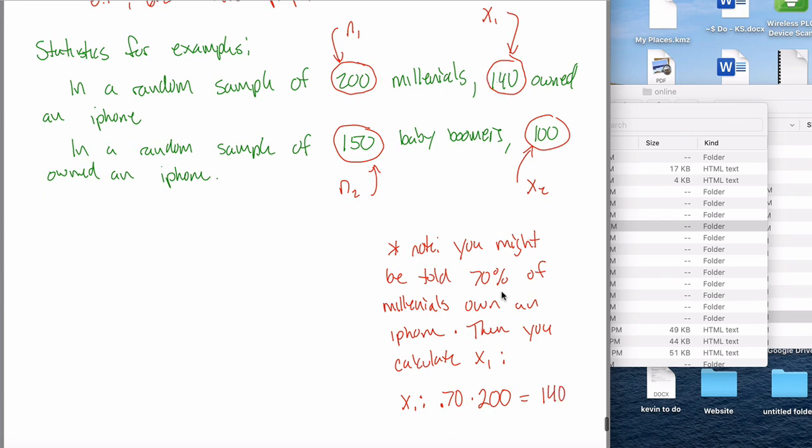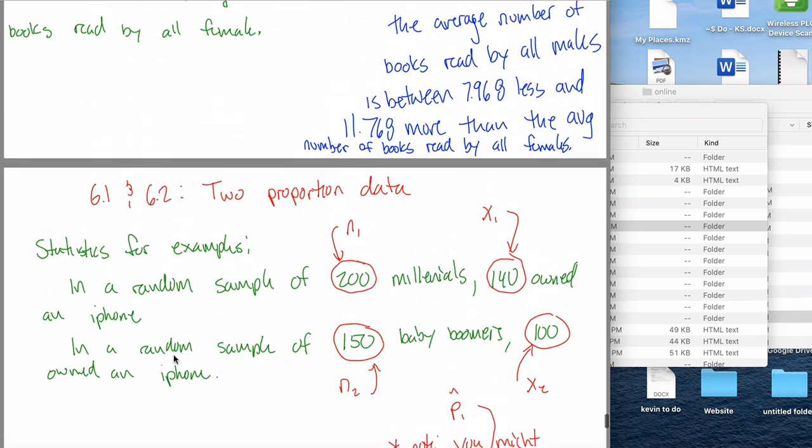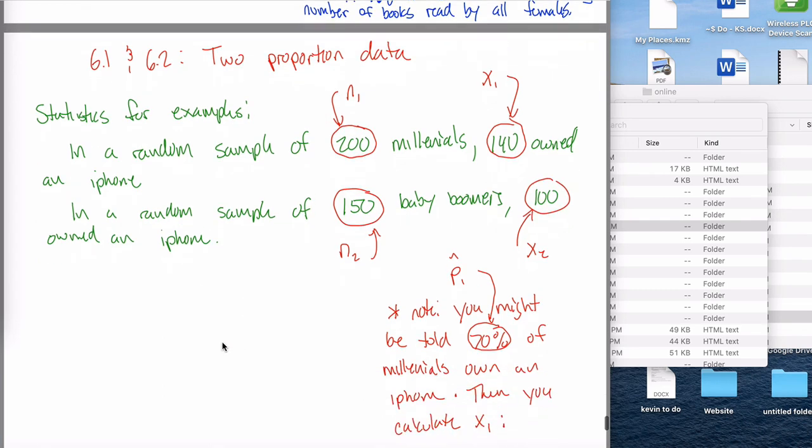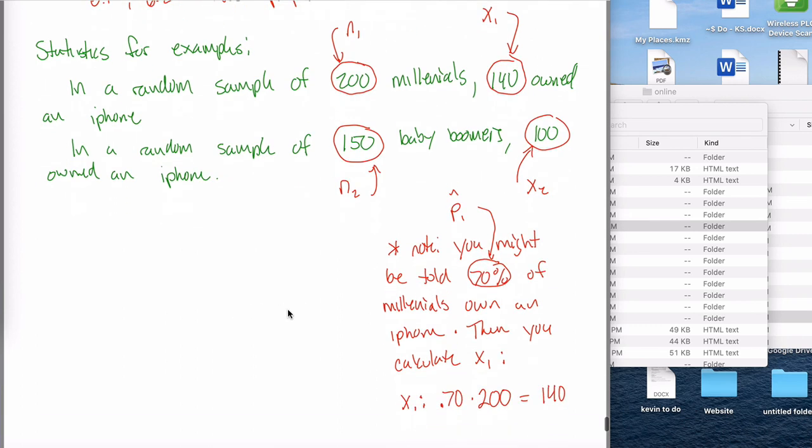So anyways, be careful of that. Sometimes you're told X, sometimes you're told P-hat. We might call this P-hat 1, the sample proportion for the first group. Anyways, with all this information, you can do the same things we've been doing. I could ask you to do hypothesis testing or ask you to make a confidence interval. What I'll do in this video is hypothesis testing, and what I'll do in the next video is a confidence interval example. You'll see that they're pretty similar to what we've been doing in the past, just a little bit of new notation to learn.